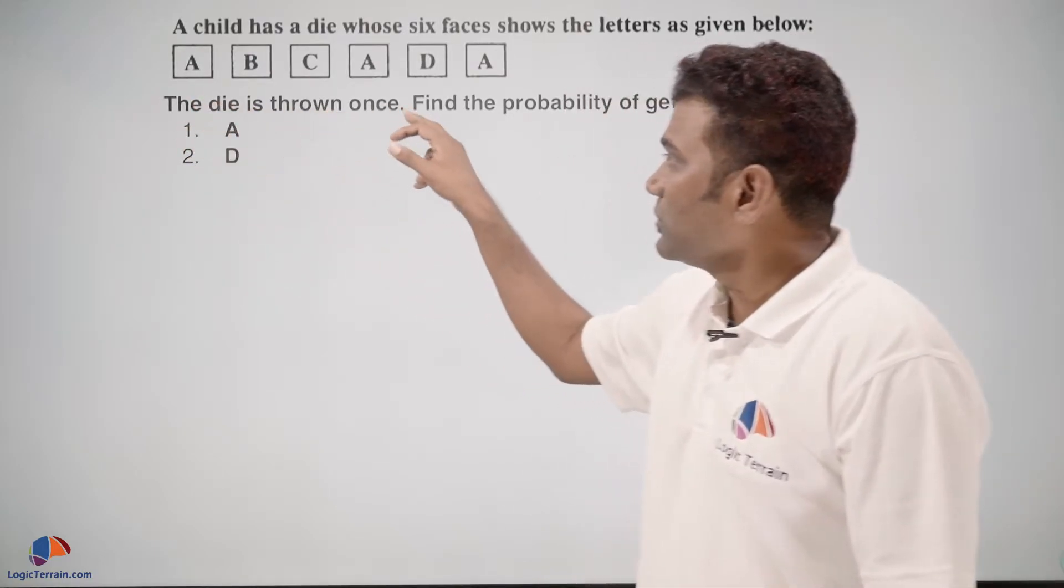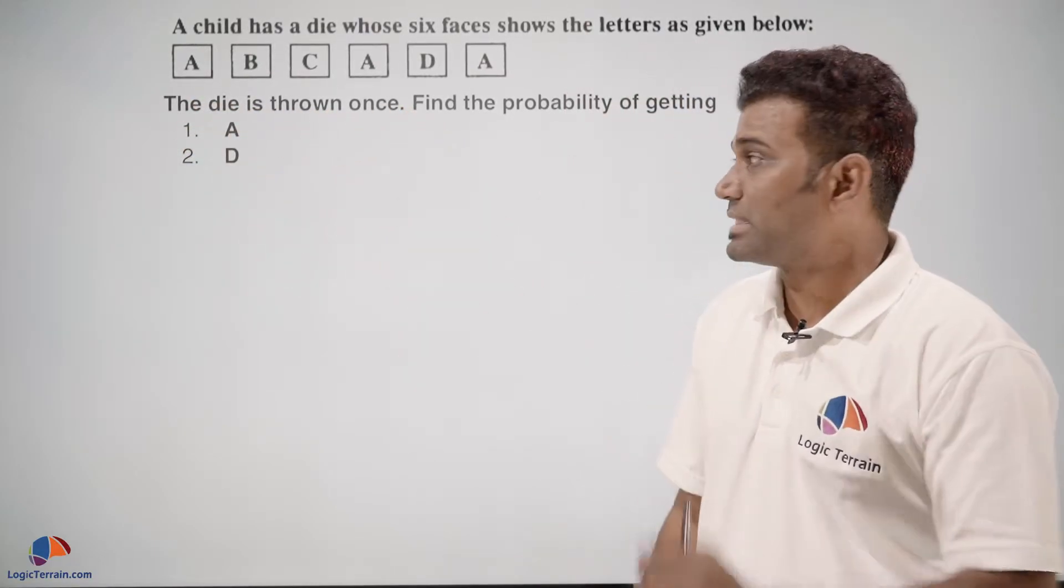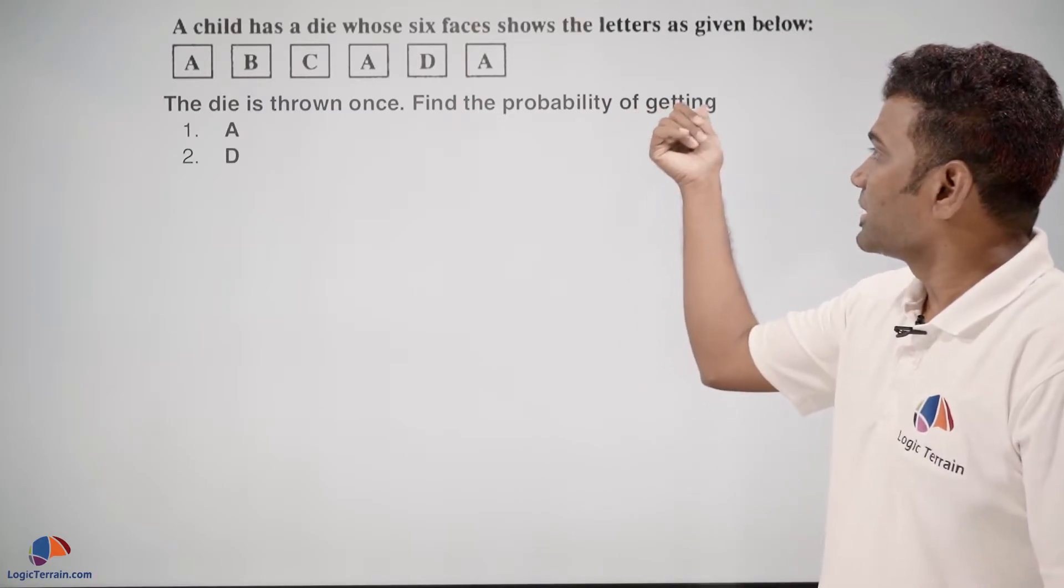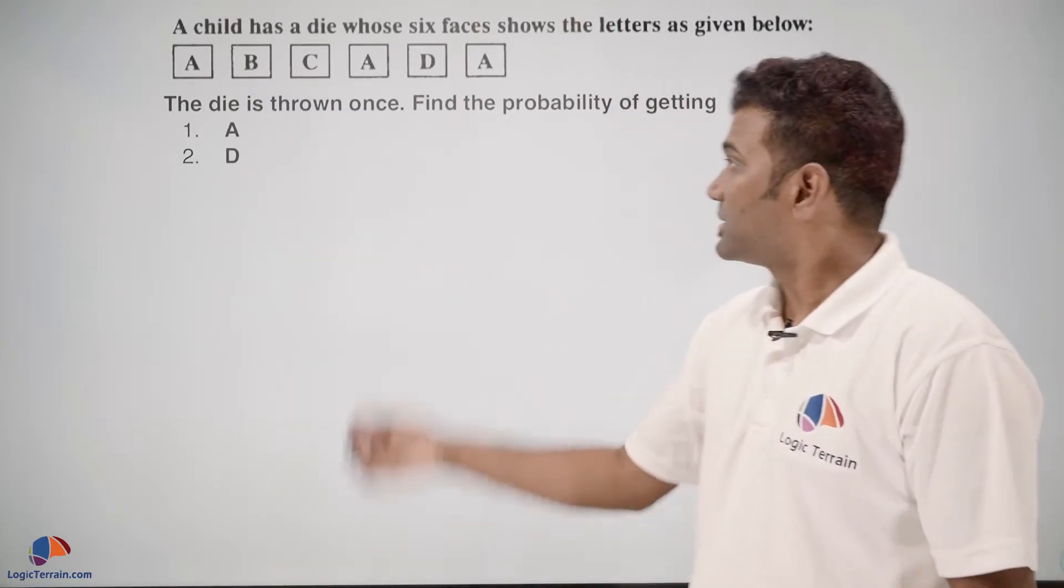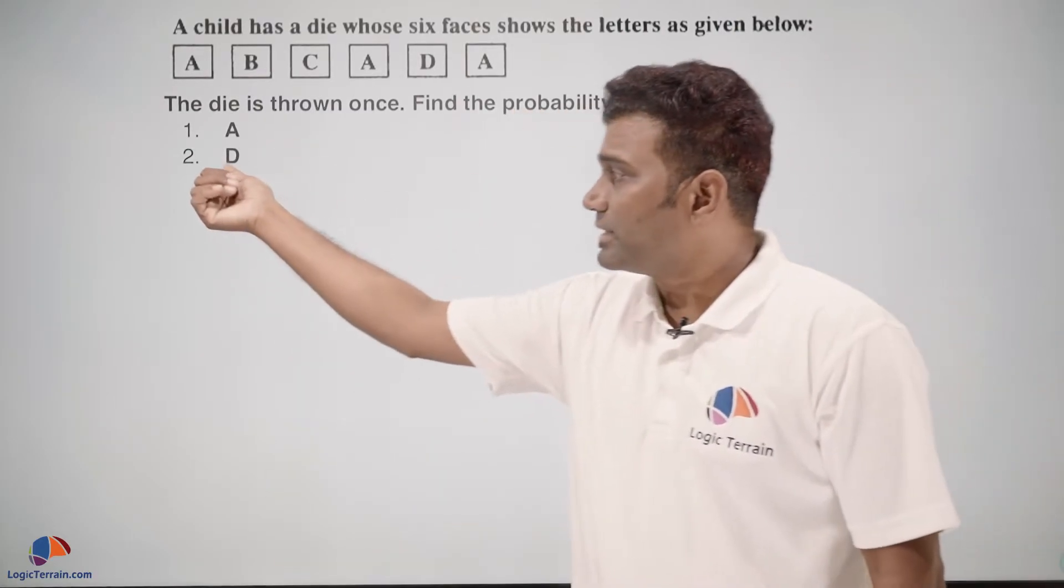Now the die is thrown once. Find the probability of getting A, as well as the probability of getting D.